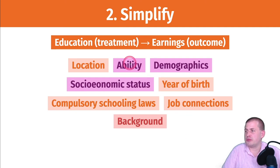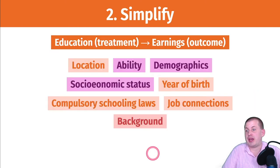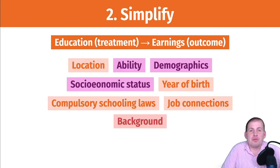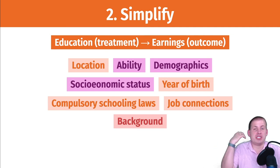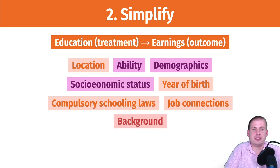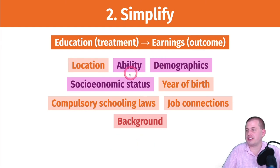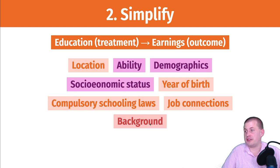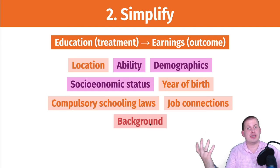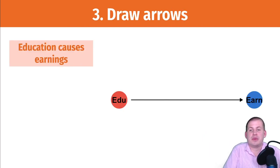We can simplify by wrapping ability, demographics, and socioeconomic status into something we call 'background.' These things don't necessarily have to be a column in a dataset or something easily measurable — they're phenomena that cause other things to happen. It would be great if they were measurable, but they don't have to be. We'll collapse these into 'background,' though in real life we'd go through the ladder of abstraction to figure out what background actually entails and how to measure it.